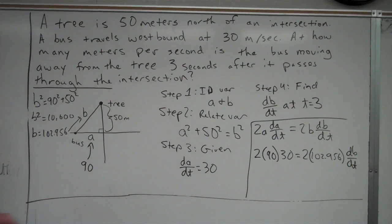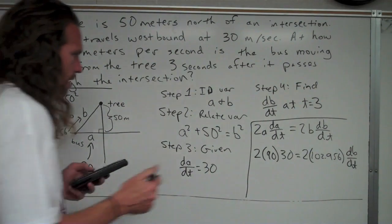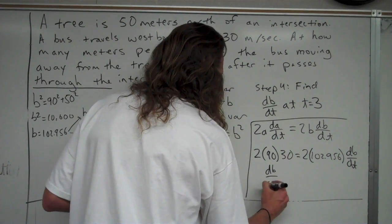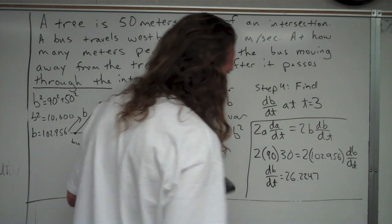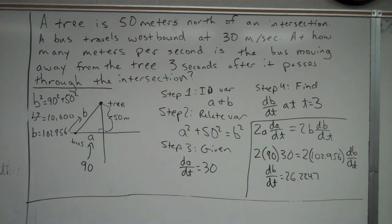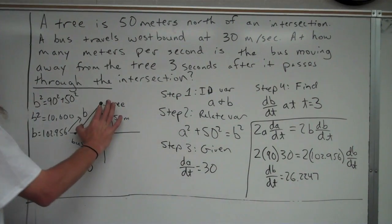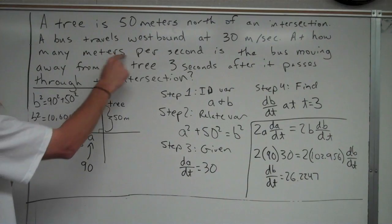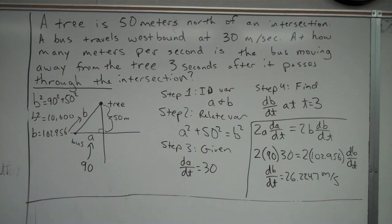Solving for dB/dt, dividing everything out, I get dB/dt equals approximately 26.224 or 26.225 meters per second. Since the problem asks for meters per second, that's our unit. So there's a pretty fun related rates problem.